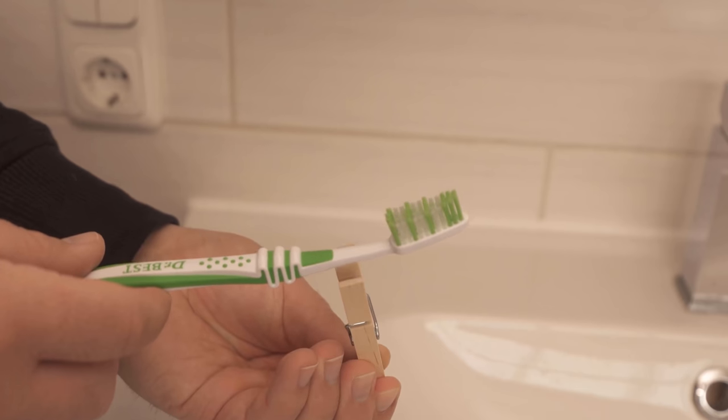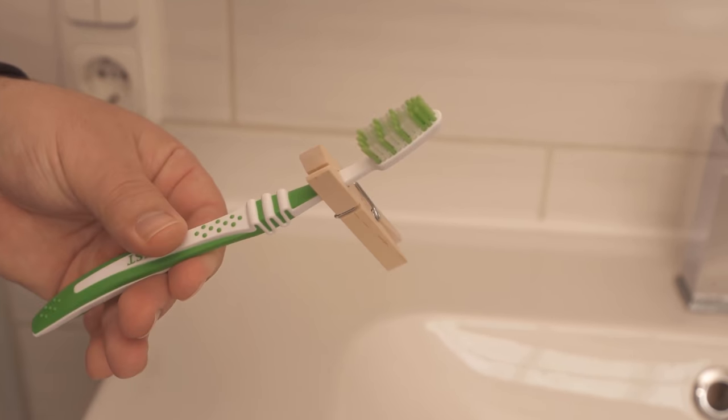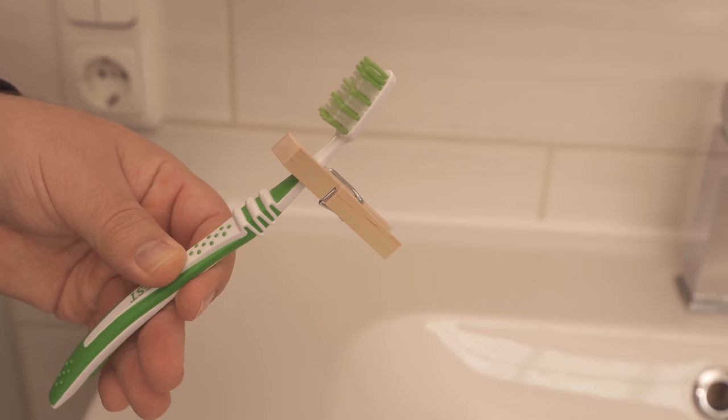To do that, you take the cloth pin together, place it like I did here at the top of the handle and then you can place it normally on the edge of the sink.